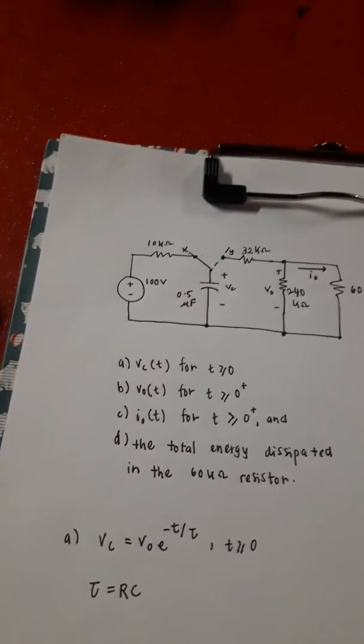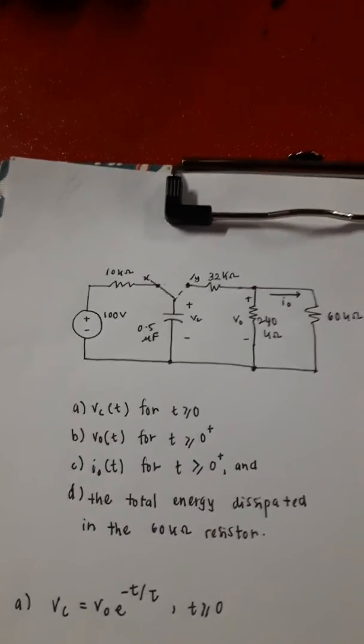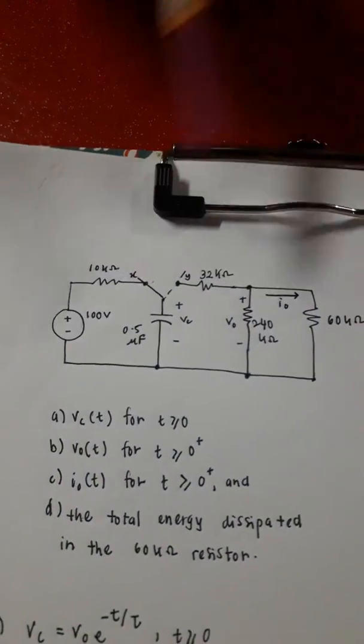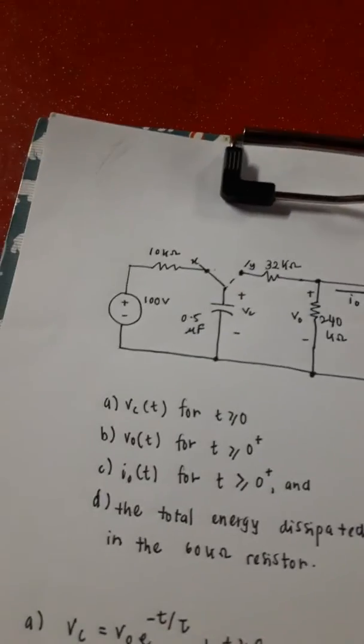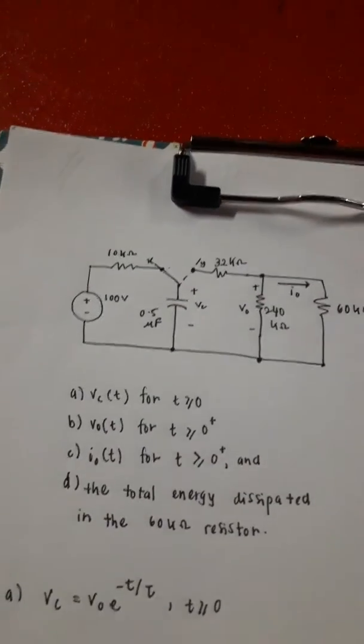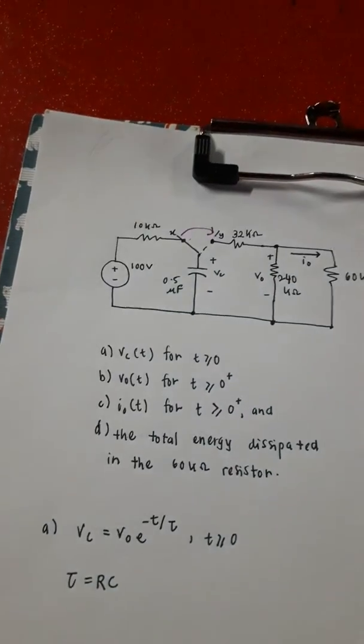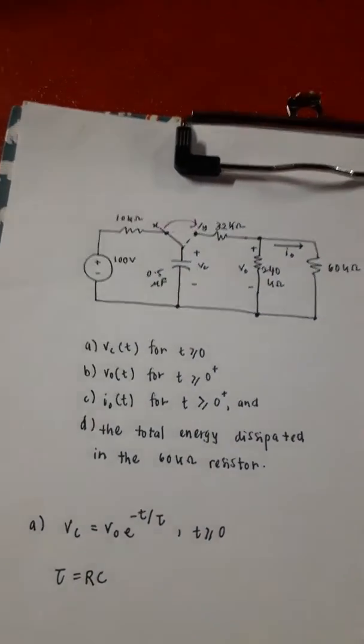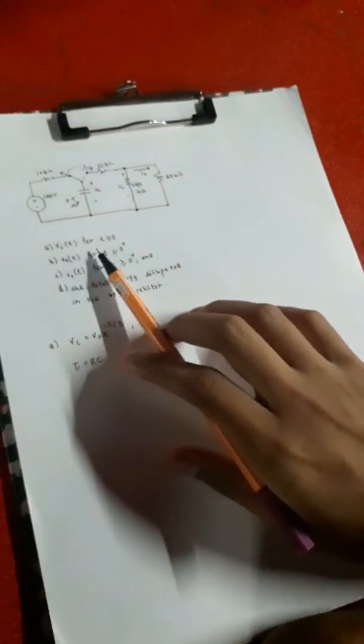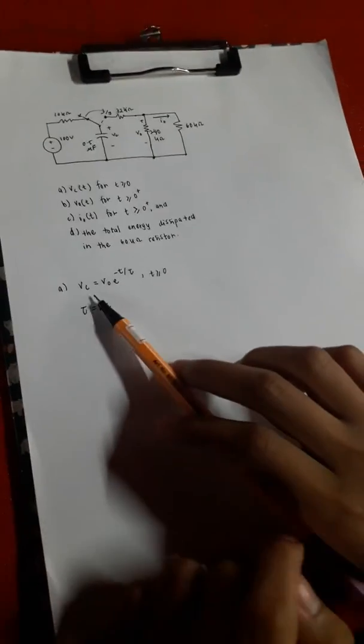So the question that we got is the switch in the circuit shown below has been in position X for a long time. At T equals to zero, the switch moves instantaneously to position Y. So the first sub-question is find VC for T more or equal to zero. So for the first question, we need to find the VC for T equals to or more than zero. So firstly this is the general...